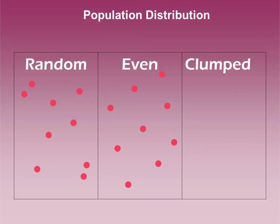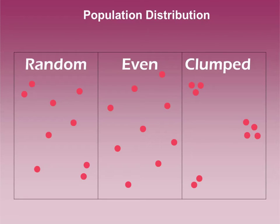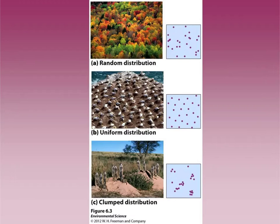The most common distribution in nature is clumped. If we were to map the location of frogs in a particular county, you'd find them clumped around their resources — in the case of frogs, probably water, because that's where they can obtain food and reproduce. Another example of clumped distributions is strength in numbers: it's a survival strategy for packs and provides protection from predators. Be sure to check out figure 6.3 in your book.